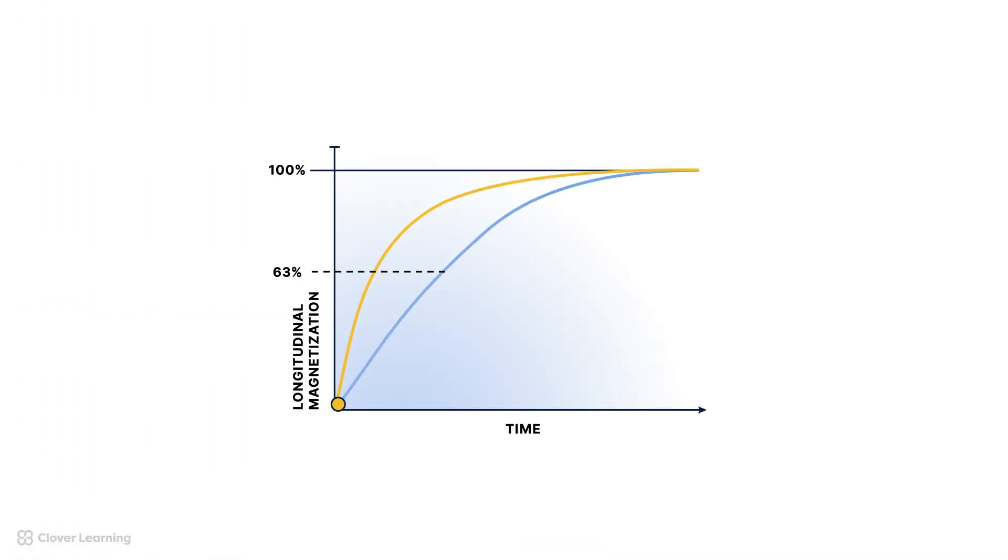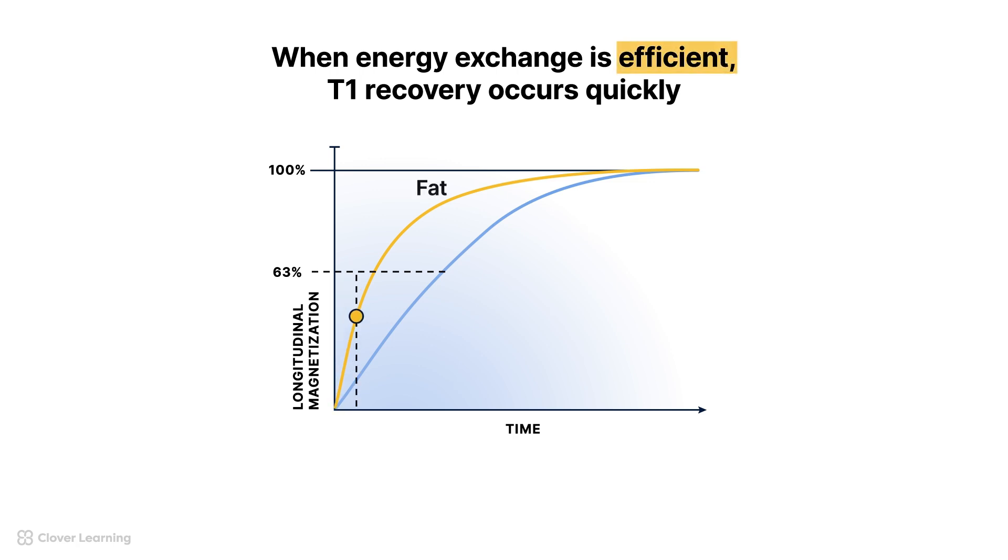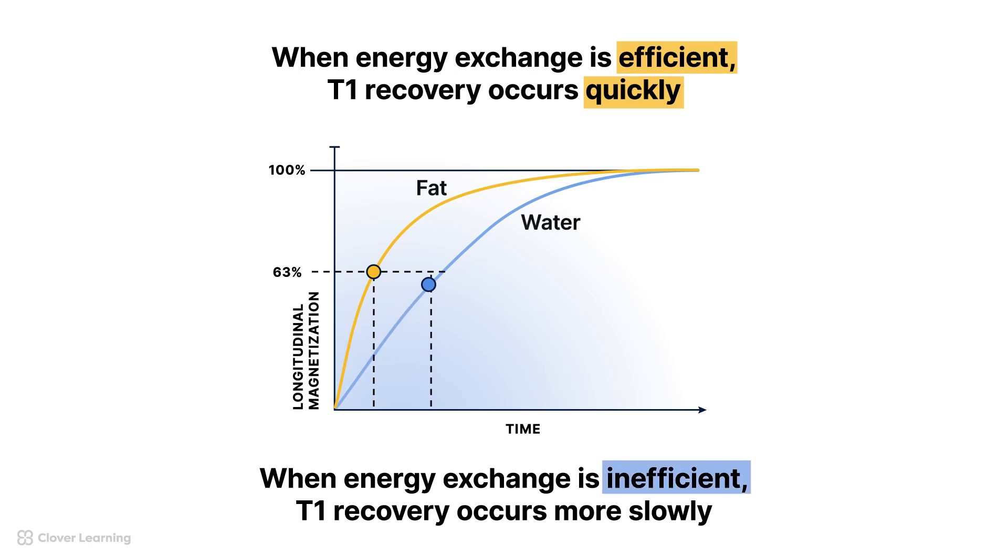This impacts the T1 recovery process. When energy exchange is efficient, T1 recovery occurs quickly. When energy exchange is inefficient, T1 recovery occurs more slowly.